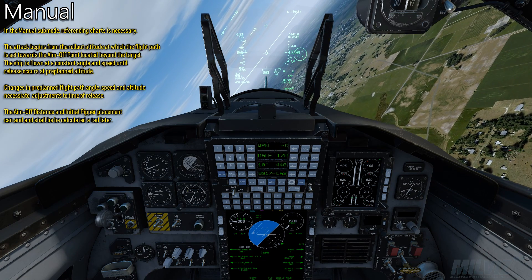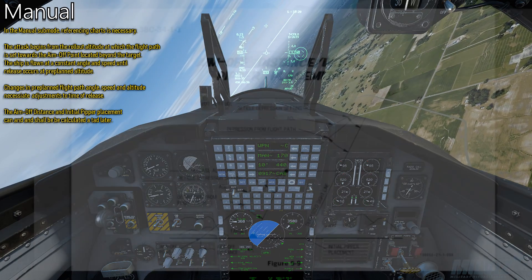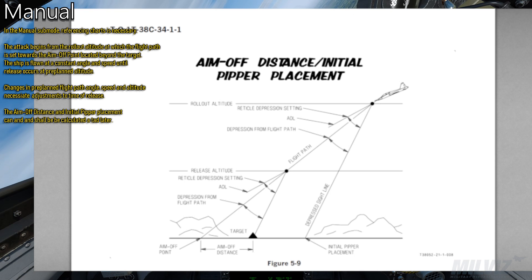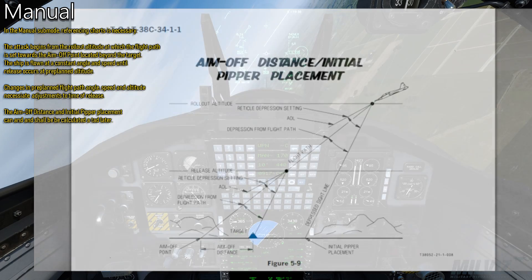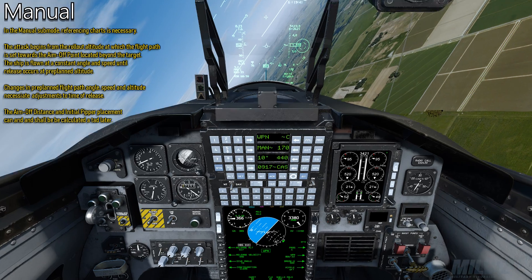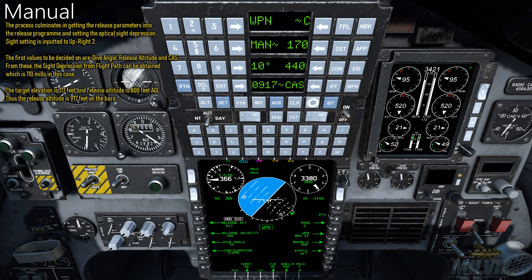In the manual sub mode, referencing charts is necessary. The attack begins from the rollout altitude at which the flight path is set towards the aim-off point located beyond the target. The ship is flown at a constant angle and speed until release occurs at pre-planned altitude. Changes in pre-planned flight path angle, speed, and altitude necessitate adjustments to time of release. The aim-off distance and initial pipper placement shall be calculated, culminating in getting the release parameters into the release program and setting the optical sight depression.